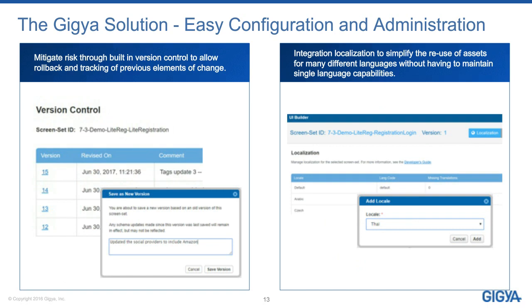Our best-practice CIM flows — screen sets as part of our registration-as-a-service platform — include two recently released features. The first is version controlling: if a digital agency in Paris deletes the submit button from a registration form, rather than debugging manually, you can simply roll back to version 14, knowing it was working, and it instantly updates on the site. This reduces risk as part of your deployment processes by having version control as part of your CIM flows.